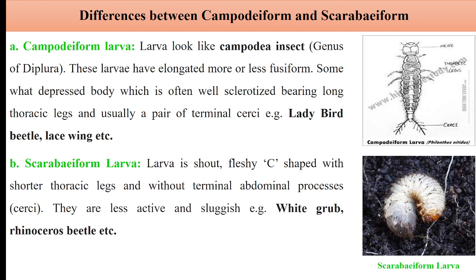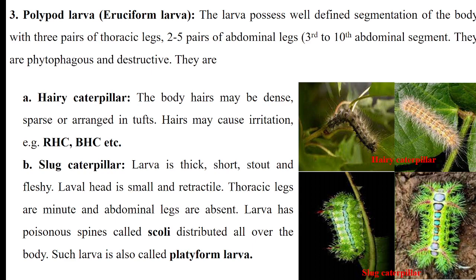Then the third type is polypod larvae. 'Poly' means many, 'pod' means legs — so this type of larvae has many legs. In addition to thoracic legs, they also have abdominal legs, known as pseudo-legs or false legs. This type of larvae is also known as Eruciform larvae. They possess well-defined segmentation of the body, with three pairs of thoracic legs and two to five pairs of abdominal legs present on the third to tenth abdominal segment. They are phytophagous and are actual pests of our crops.